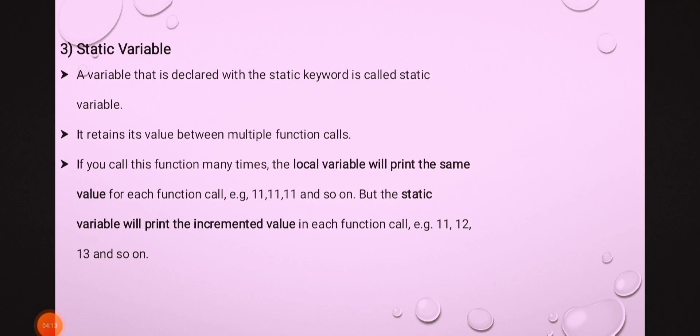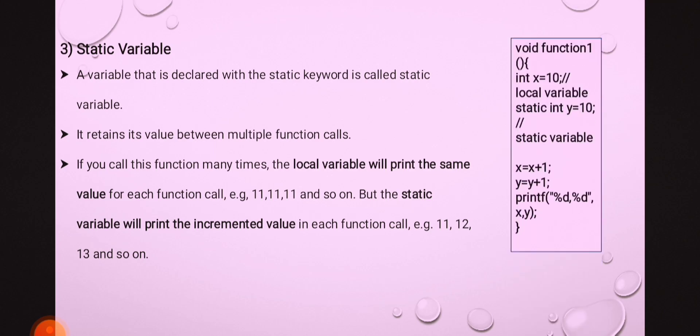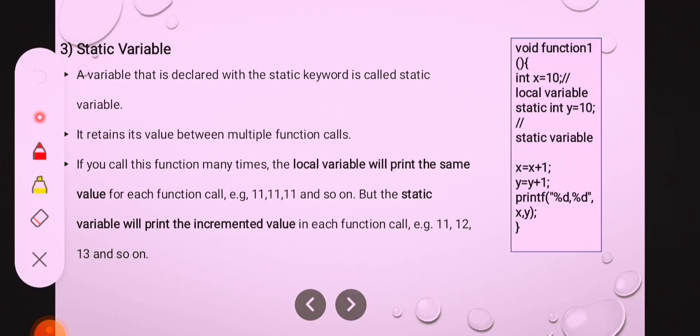The third type of variable is the static variable. A static variable is stored in memory, and its initial value is 0. In this example, there are two variables: the first one is a local variable and the second is a static variable. Both variables have a scope within only this block.